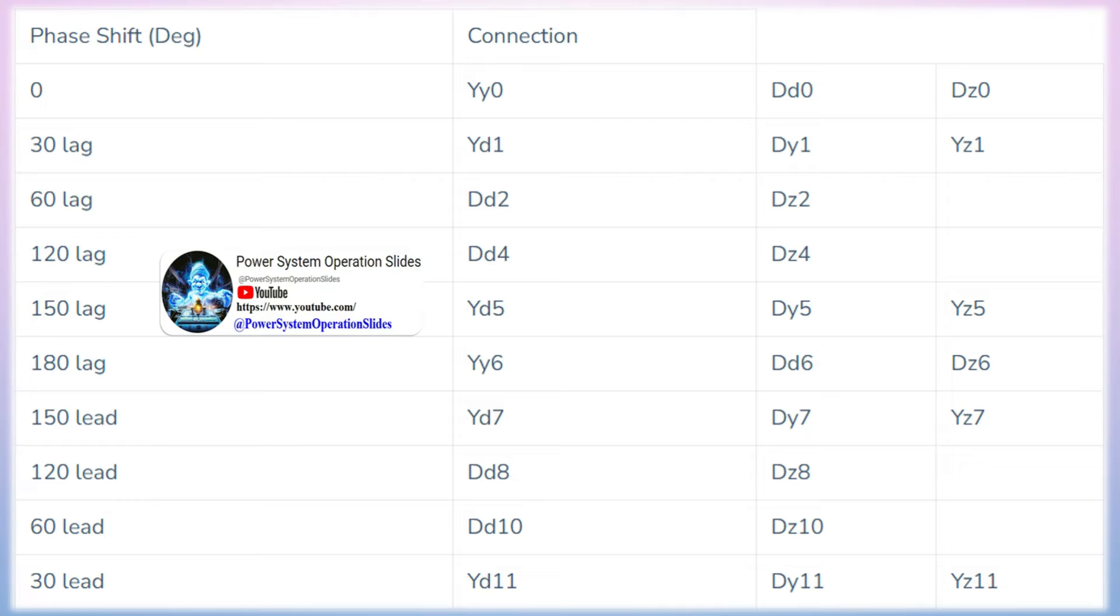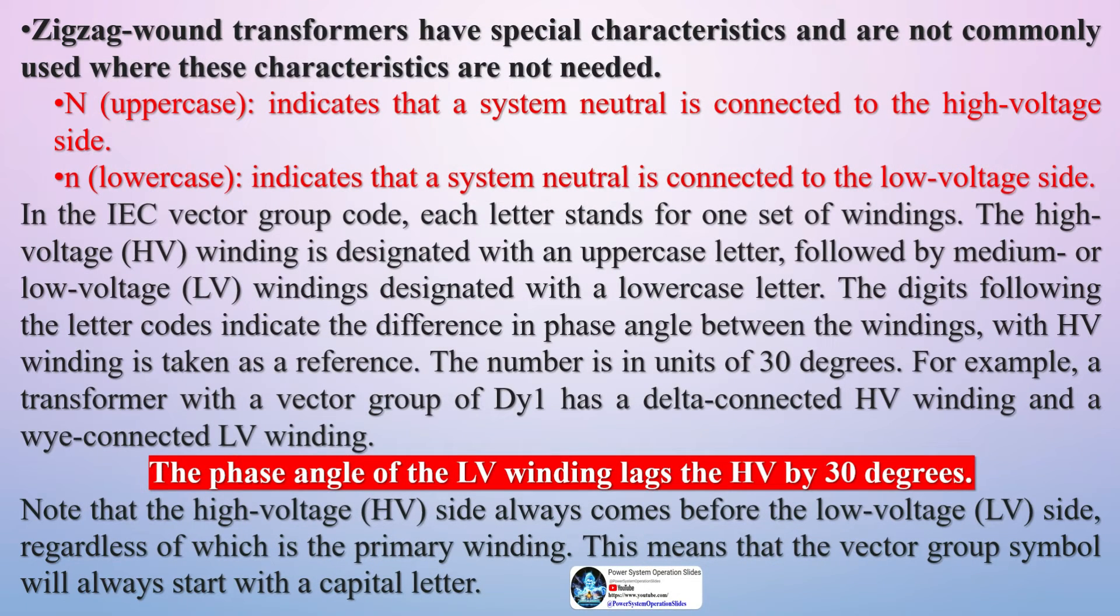The most common vector configuration of three-phase transformers is the dyn11 vector group. Where can you find the vector group of the transformer? You can find the transformer vector groups by checking the nameplate of that transformer.